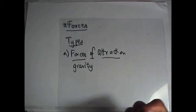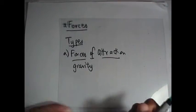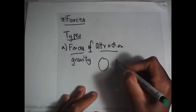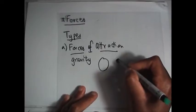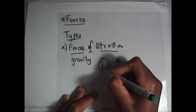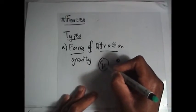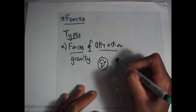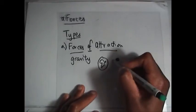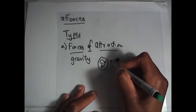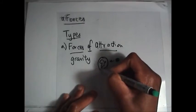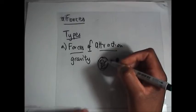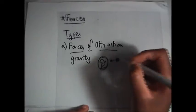Gravity is due to the presence of a mass. If there is a mass close to a body — let's say there is Earth here and then there is an asteroid here — due to the presence of Earth, this asteroid will experience a force called gravity because of the mass of the Earth. The gravitational attraction on a body is called its weight.